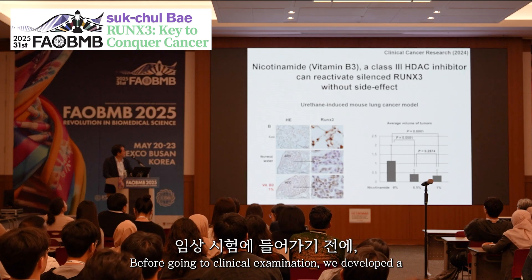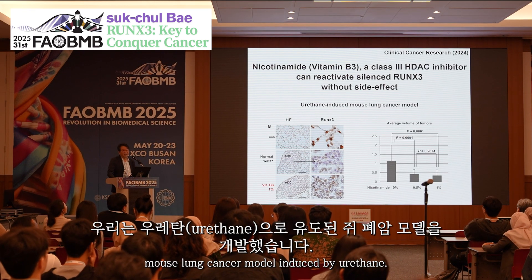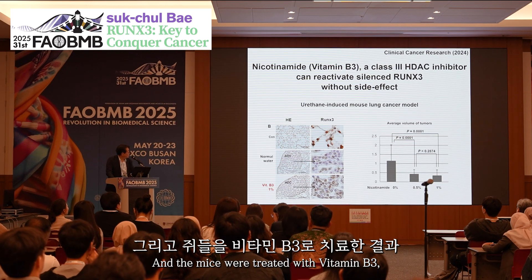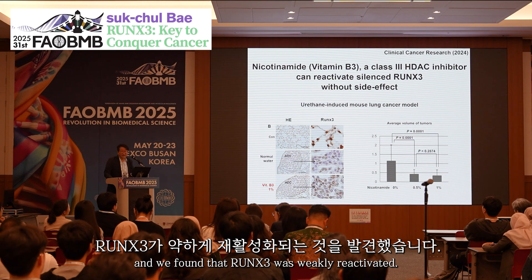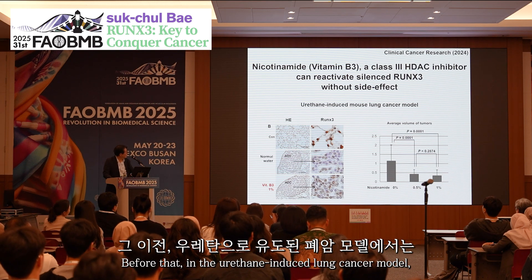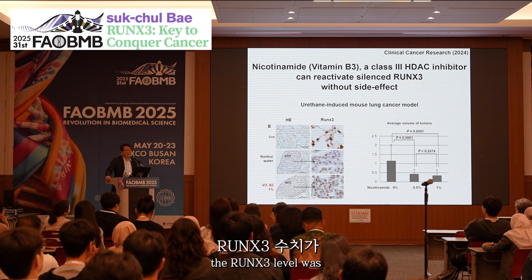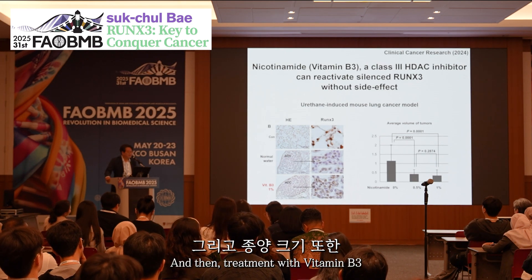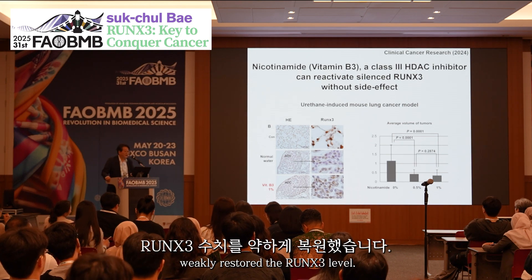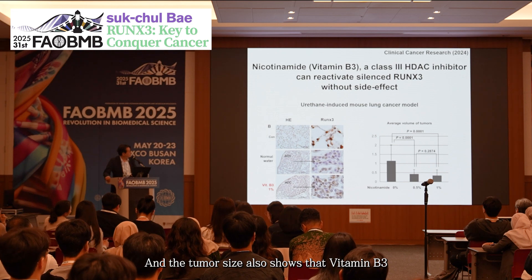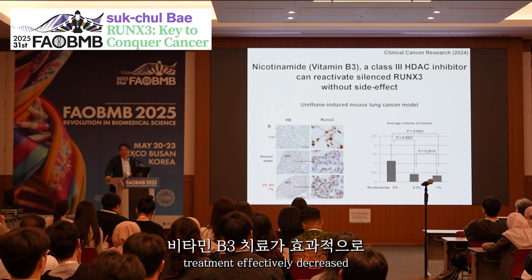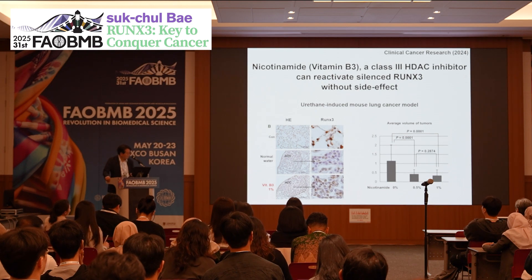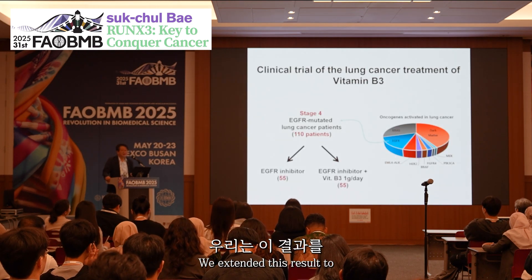Before going into clinical examination, we developed a lung cancer mouse model induced by urethane. The mice were treated with Vitamin B3, and we found that RUNX3 was weakly reactivated. Before treatment, the urethane-induced lung cancer model showed RUNX3 levels were markedly decreased. Treatment with Vitamin B3 weakly restored the level of RUNX3, and the size of tumors also showed that Vitamin B3 treatment effectively decreased tumor size. We then extended these results to human clinical trials.